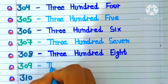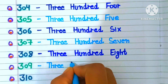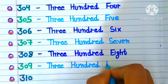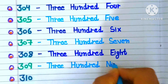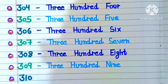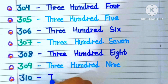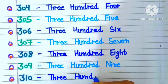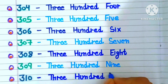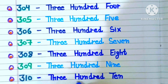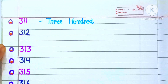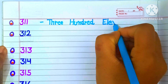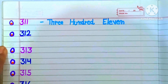309: THREE HUNDRED NINE. 310: THREE HUNDRED TEN. 311: THREE HUNDRED ELEVEN.